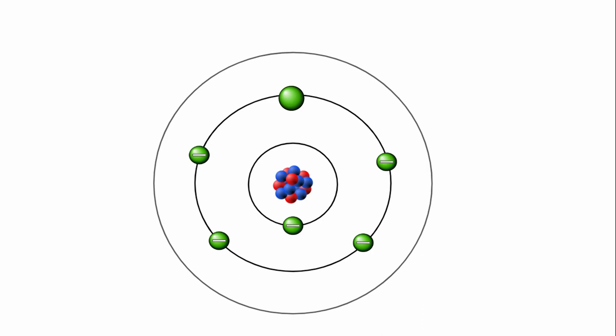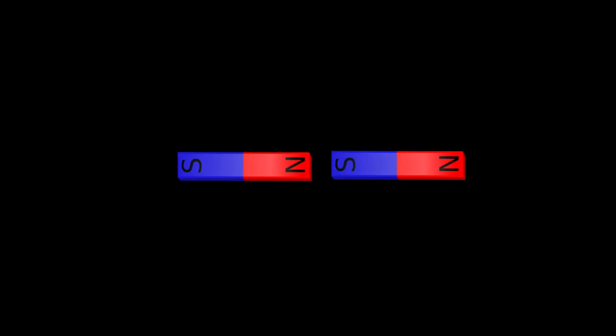If you give an atom enough energy, this energy can be absorbed by an electron, which jumps from a lower energy level to a higher energy level. Think of it like pulling two magnets apart, you have to put energy in to move them away from each other.